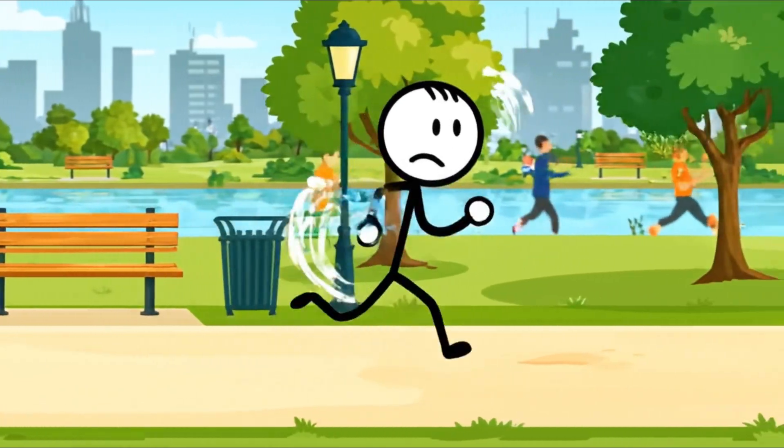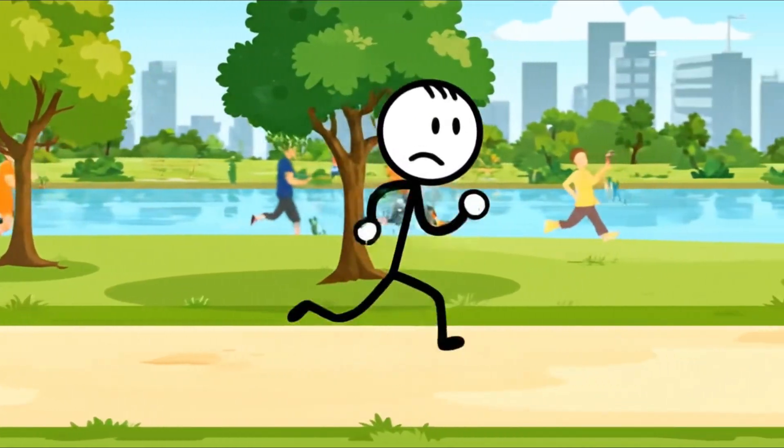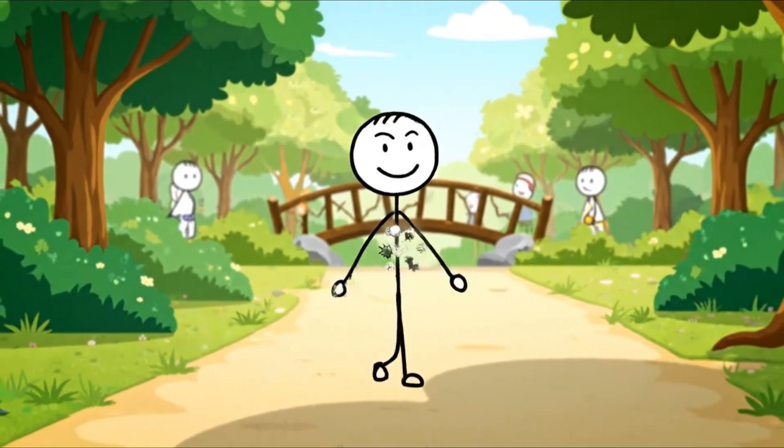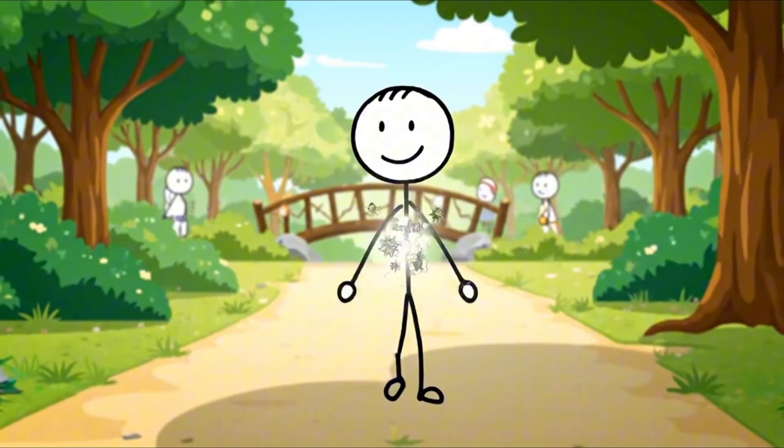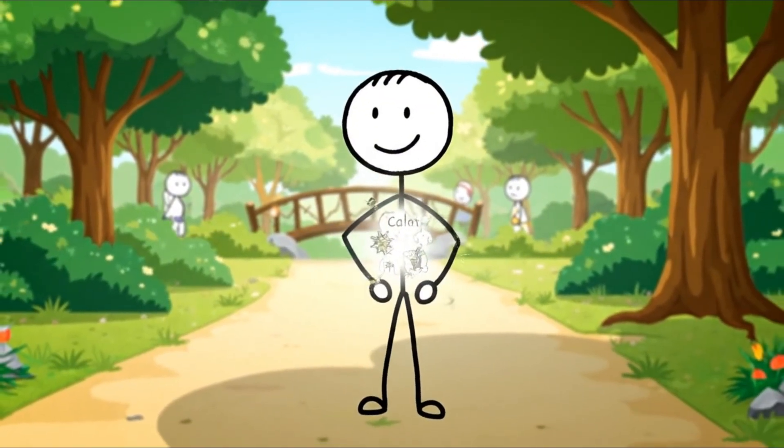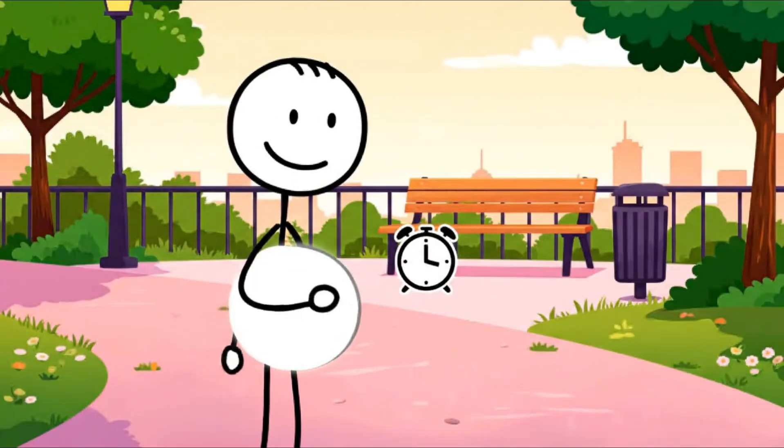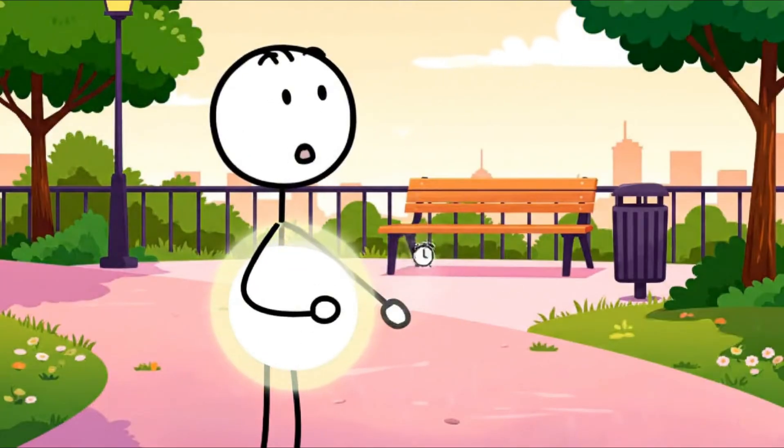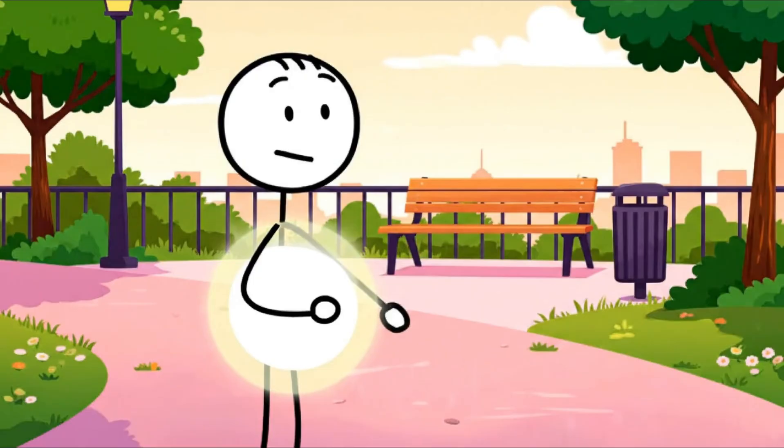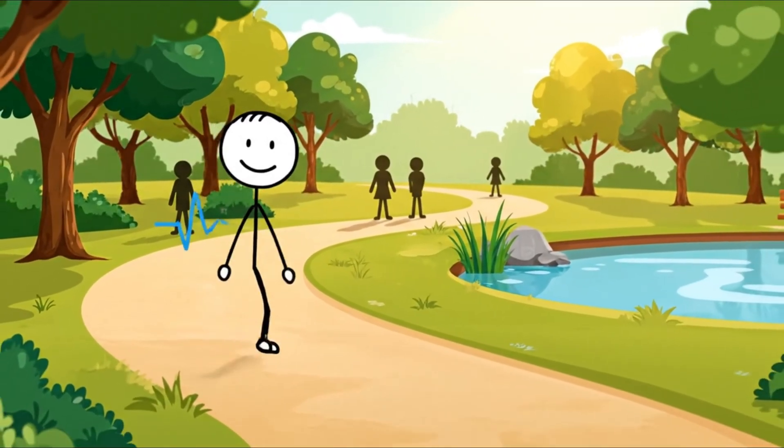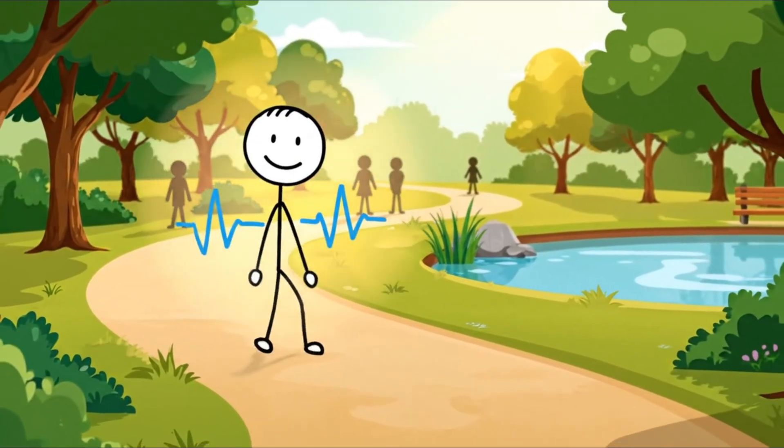What makes walking truly powerful isn't a single session. It's what happens when the body begins to expect the movement. With regular walking, your physiology adapts in subtle but meaningful ways. Mitochondria increase in both number and efficiency, allowing your cells to rely on fat more readily. Blood vessels become better at delivering oxygen. Hormonal responses grow more stable. Over time, the internal switch toward fat oxidation flips sooner and with less resistance.